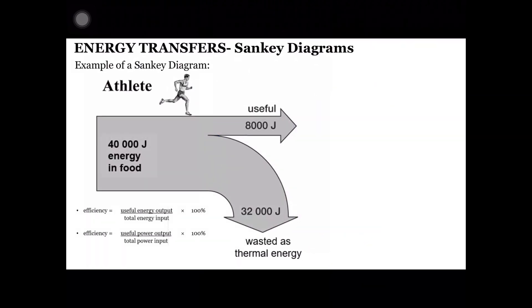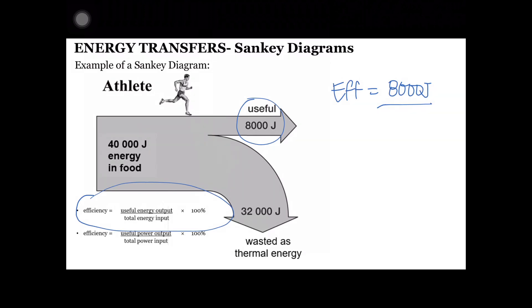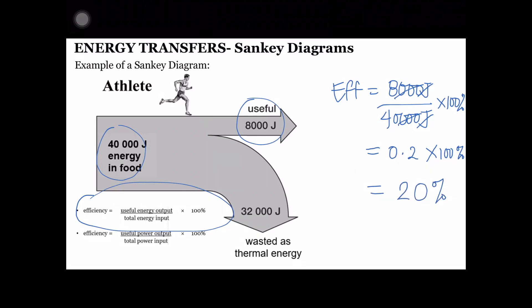We can use this Sankey Diagram to calculate the efficiency of the runner's body. Efficiency is equal to the useful energy output divided by total energy input times 100%. In this case, the efficiency is equal to 8,000 joules divided by 40,000 joules times 100%. We can cancel the units, so 8 divided by 40 is 0.2 times 100%. Therefore, the efficiency of the human body is 20%. We can conclude that the human body is inefficient since most of the energy input is wasted as heat.